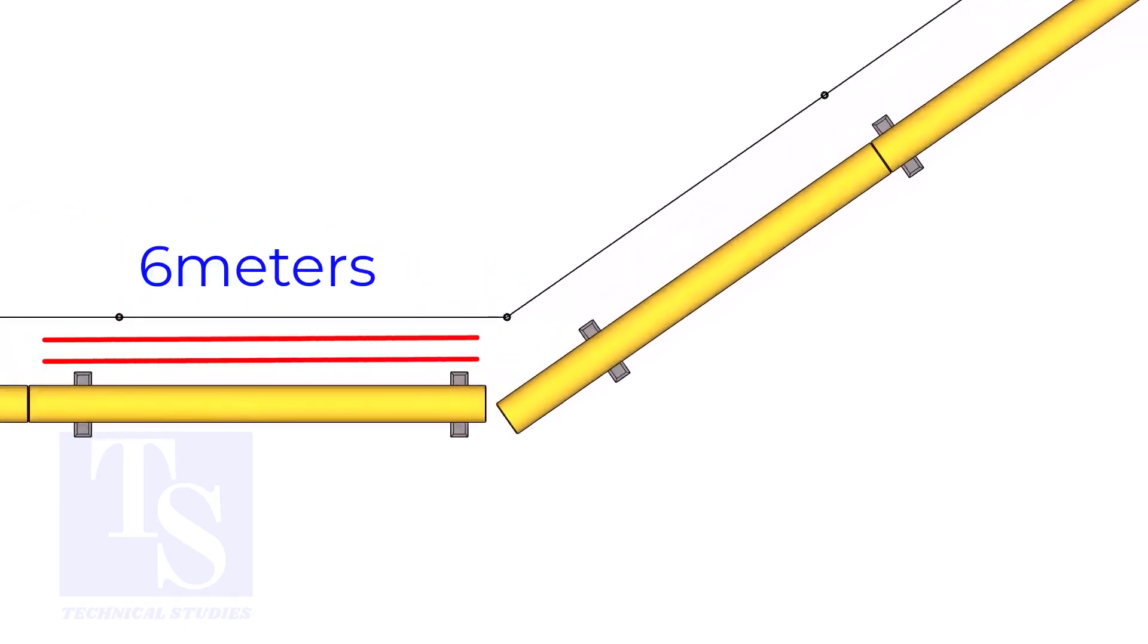The pipe shall be parallel to the fencing, not necessarily the entire length, but at least 6 meters on both sides.